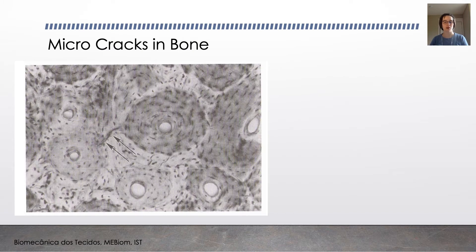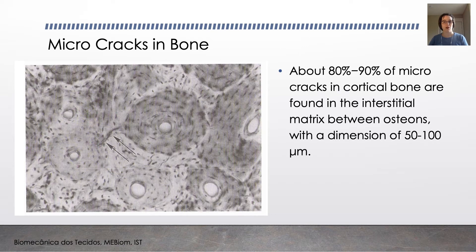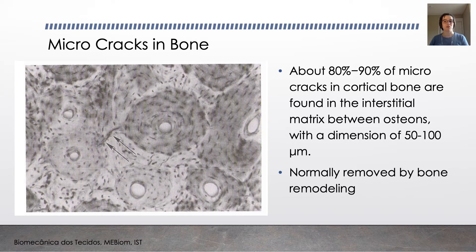Bone has naturally occurring microcracks, as you can see in this micrograph here indicated by the arrows. About 80 to 90% of microcracks in cortical bone are found in the interstitial matrix between the osteons, and they have dimensions of 50 to 100 micrometers. They occur in healthy bones and typically they'll be removed by remodeling, but under certain conditions they can grow in length and become macrocracks that will lead to bone failure.